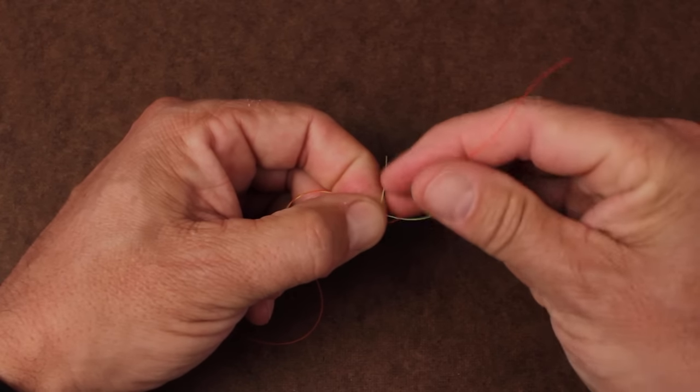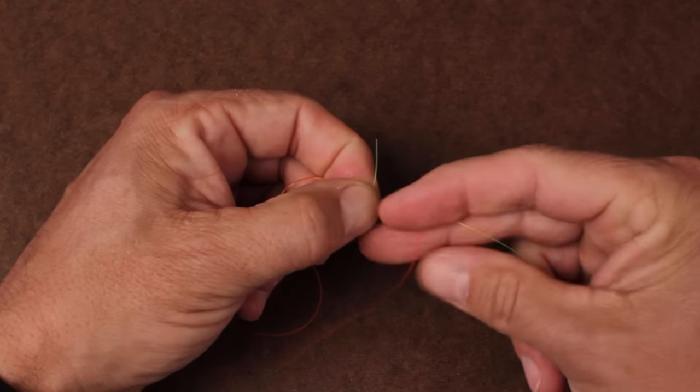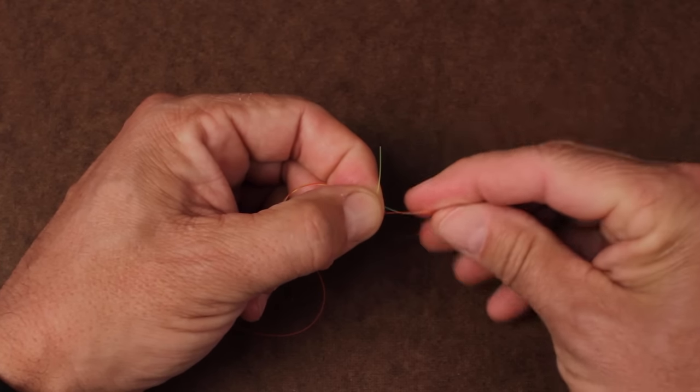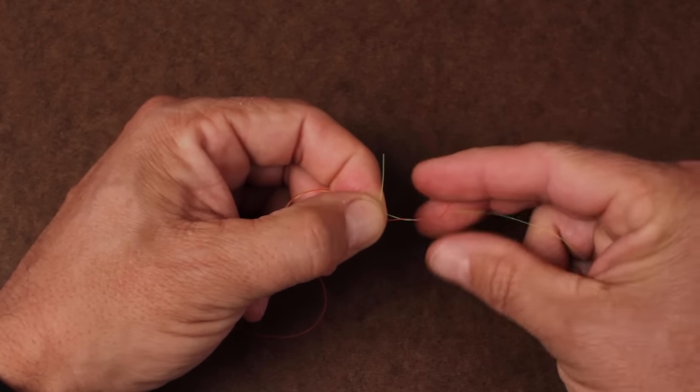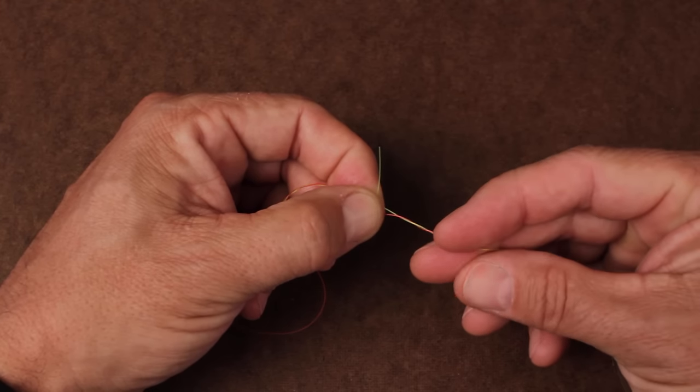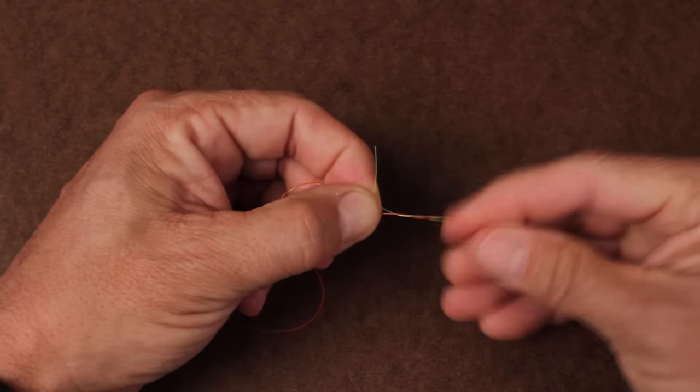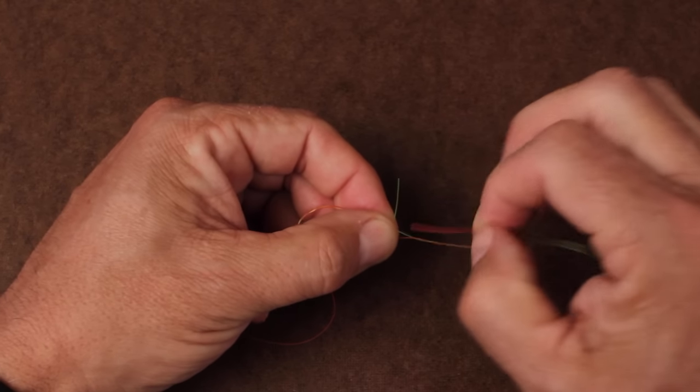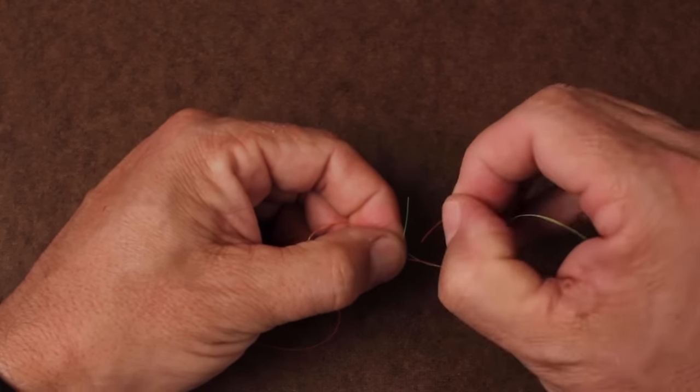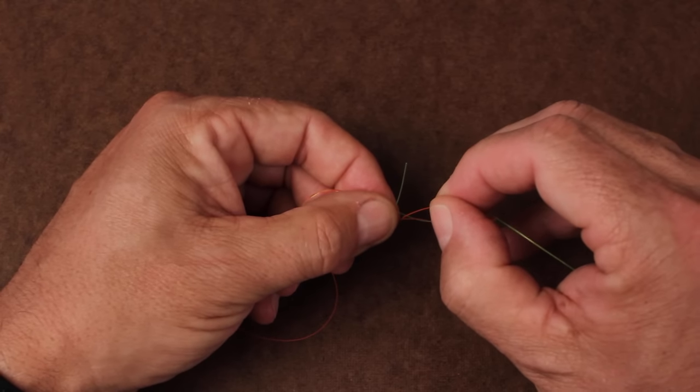Get hold of the heavier tag and take 5 wraps in the opposite direction, so as it goes over top, it's being wrapped away from you. After 5 wraps, feed the tag through the open intersection in the opposite direction as the first tag.